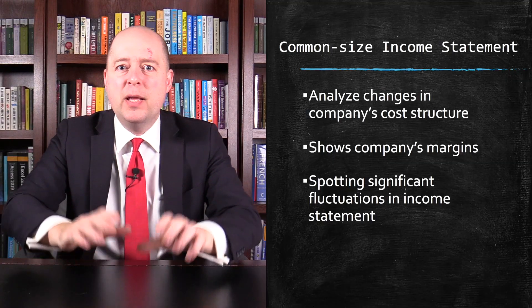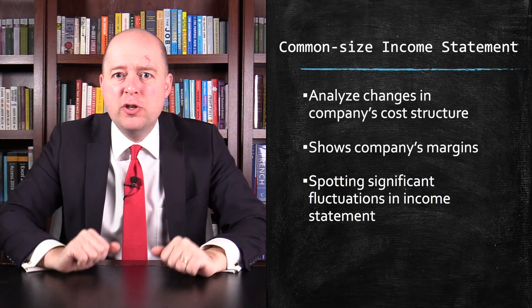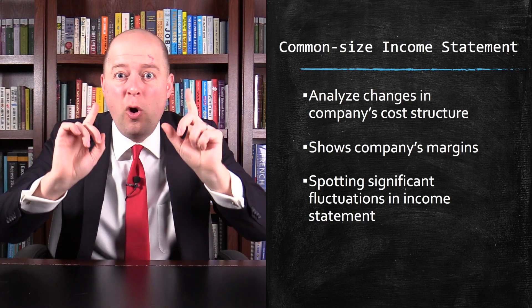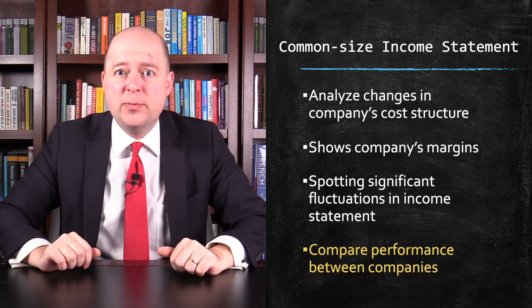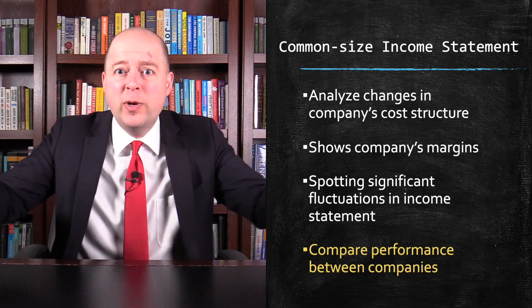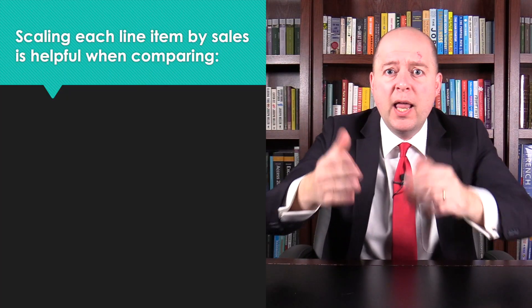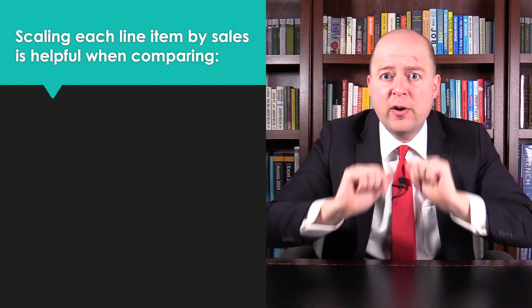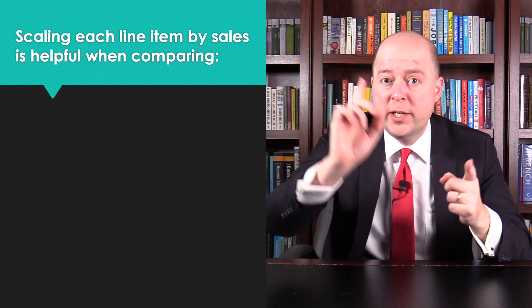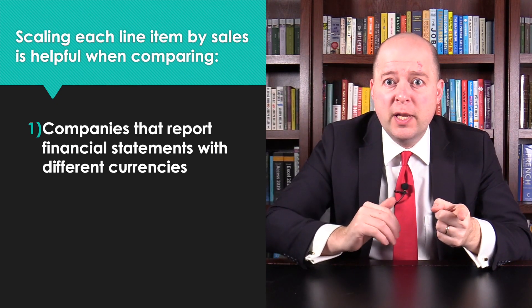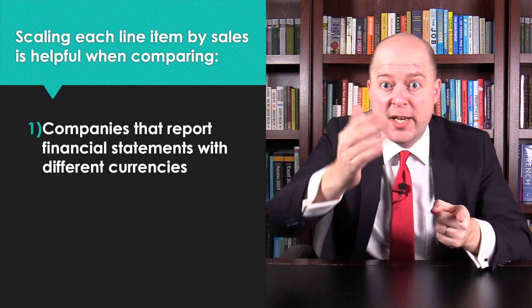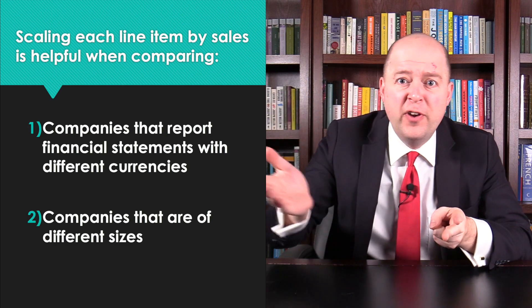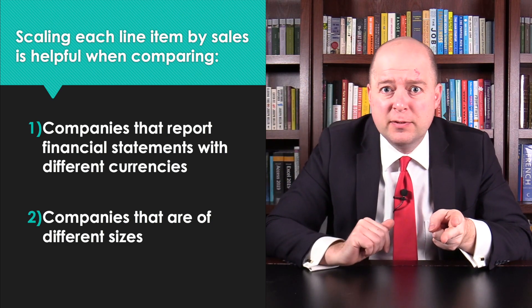But a common-size income statement is not just used to assess a company's performance over time — it's also used to assess performance between companies. Scaling each line item by total sales is very helpful when comparing companies that report financial statements using different currencies, or when comparing companies that are of very different sizes.